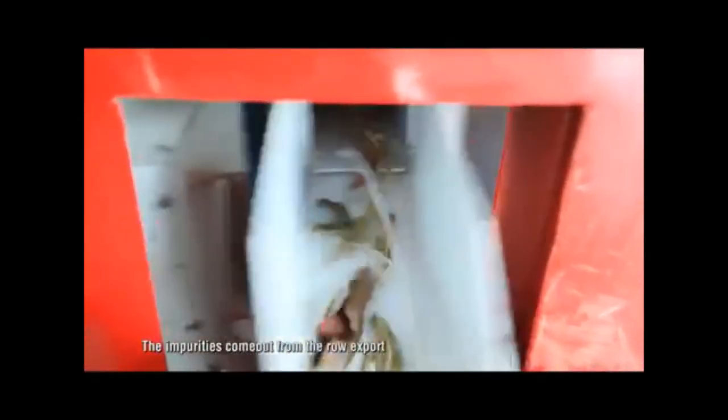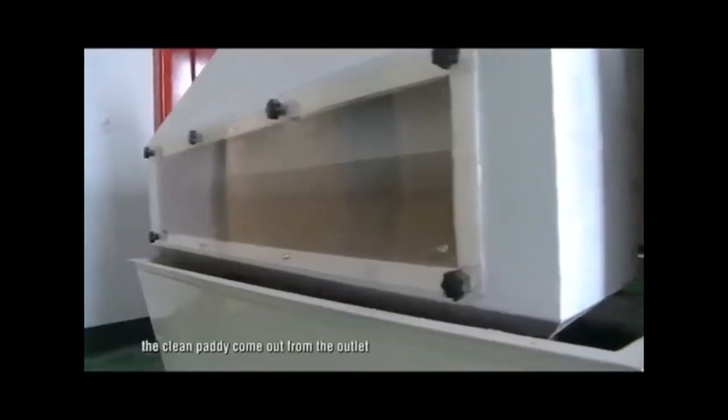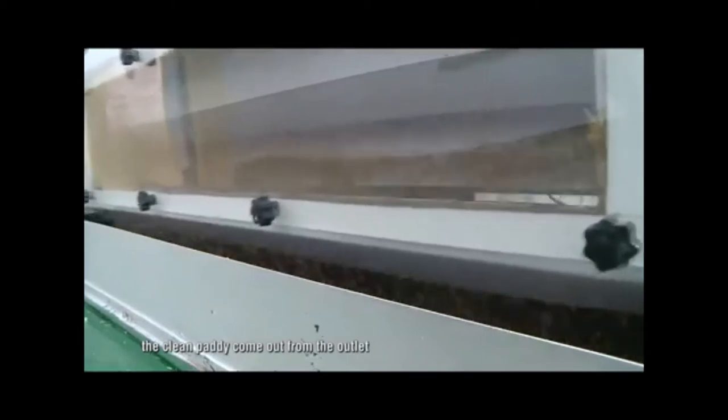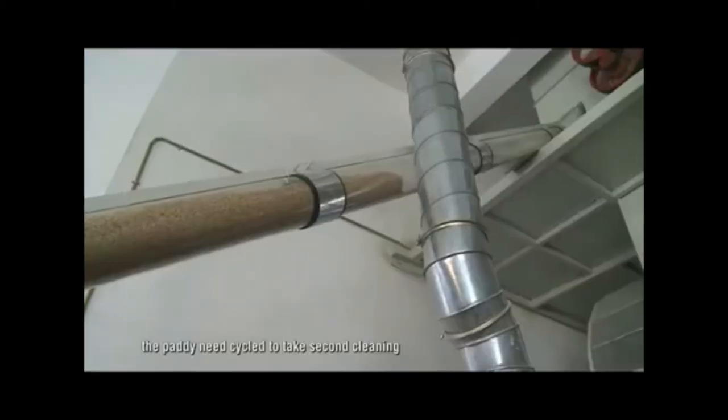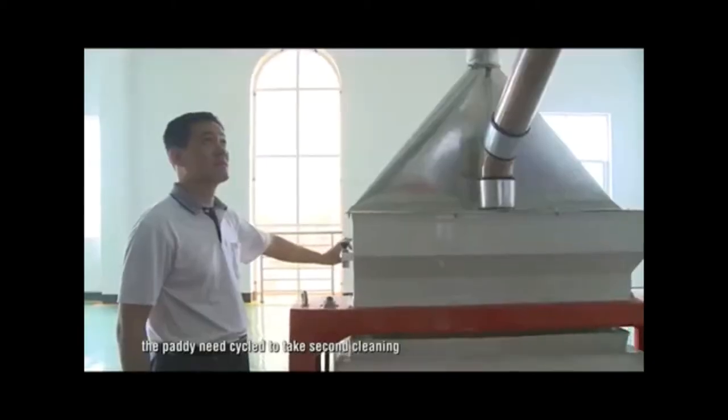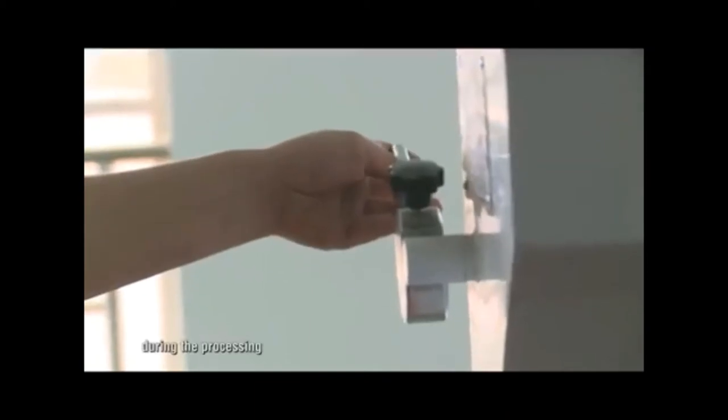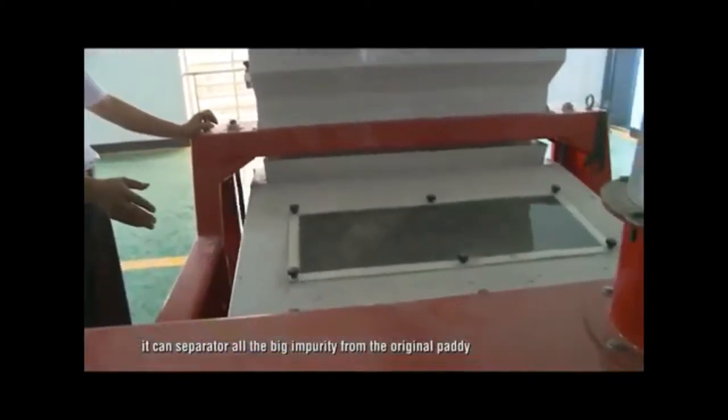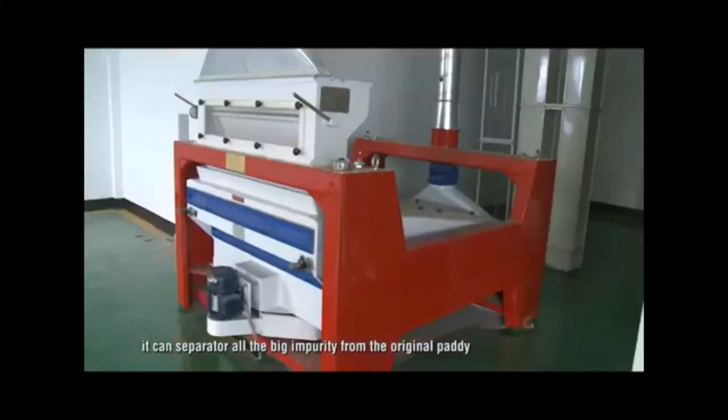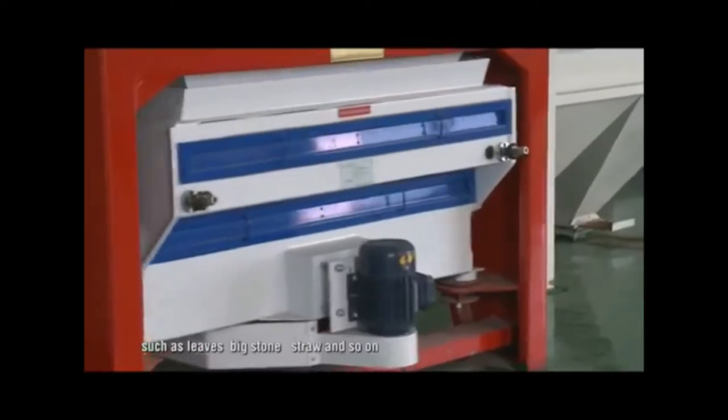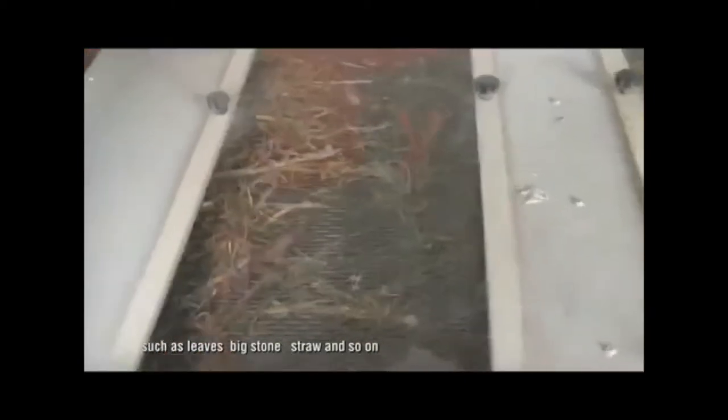The impurities come out from the outlet port. The clean paddy comes out from the outlet. After the first cleaning, the paddy needs to be cycled to take second cleaning. During the processing, it can separate all the big impurities from the original paddy, such as leaves, big stones, straw and so on.